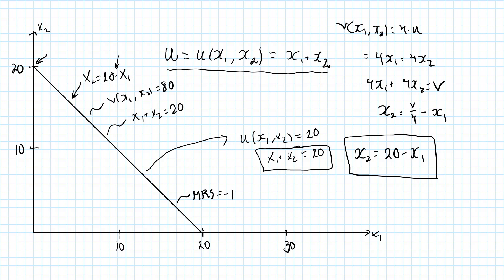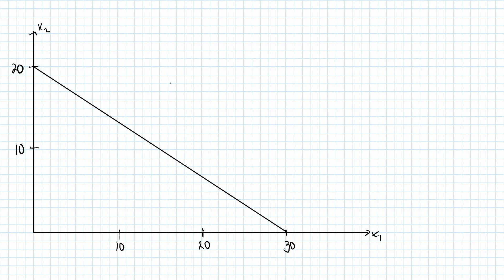Now consider the case when we have two goods that are perfect substitutes, but the consumer is willing to substitute one for the other, but not in a one-to-one ratio. Here is an example. The MRS, that is the slope of the indifference curve, is everywhere minus 20 divided by 30, or minus 2 over 3. The consumer is willing to trade one unit of good 1 for two-thirds units of good 2, or equivalently, three units of good 1 for two units of good 2.